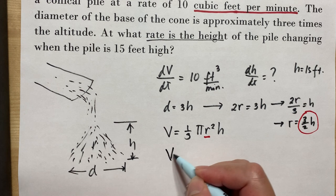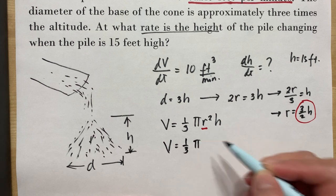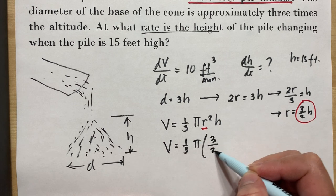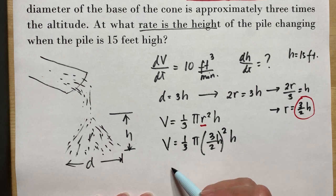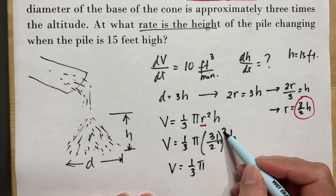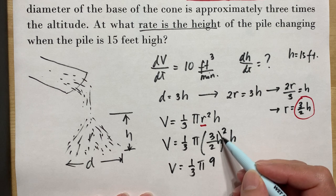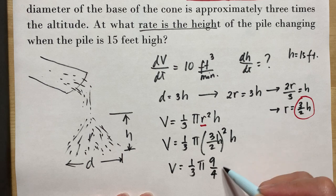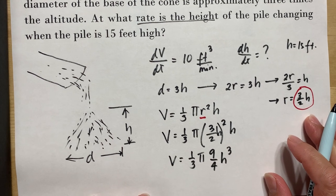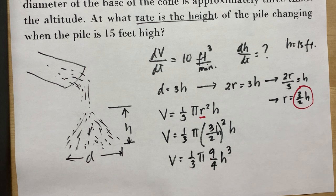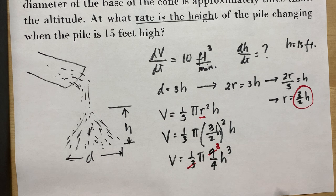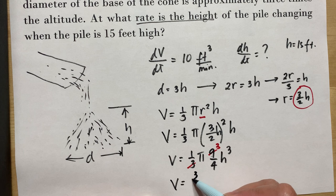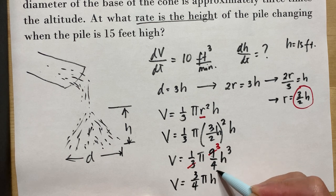We substitute r = (3/2)h into the volume formula: V = (1/3)π · ((3/2)h)² · h. Distributing the exponents gives 3² = 9 and 2² = 4, and h² · h = h³. Simplifying — the 3 in the denominator and 9 give 3 — so the volume simplifies to V = (3/4)πh³.